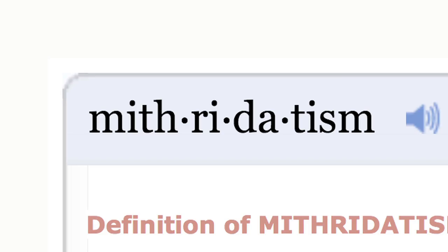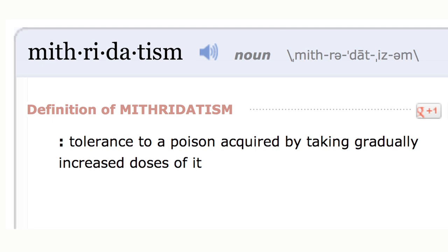The idea of building up an immunity to poisons has been around a long time. The term Mithridatism refers to the practice of building up an immunity to a toxin by gradually exposing yourself to non-lethal amounts of it.